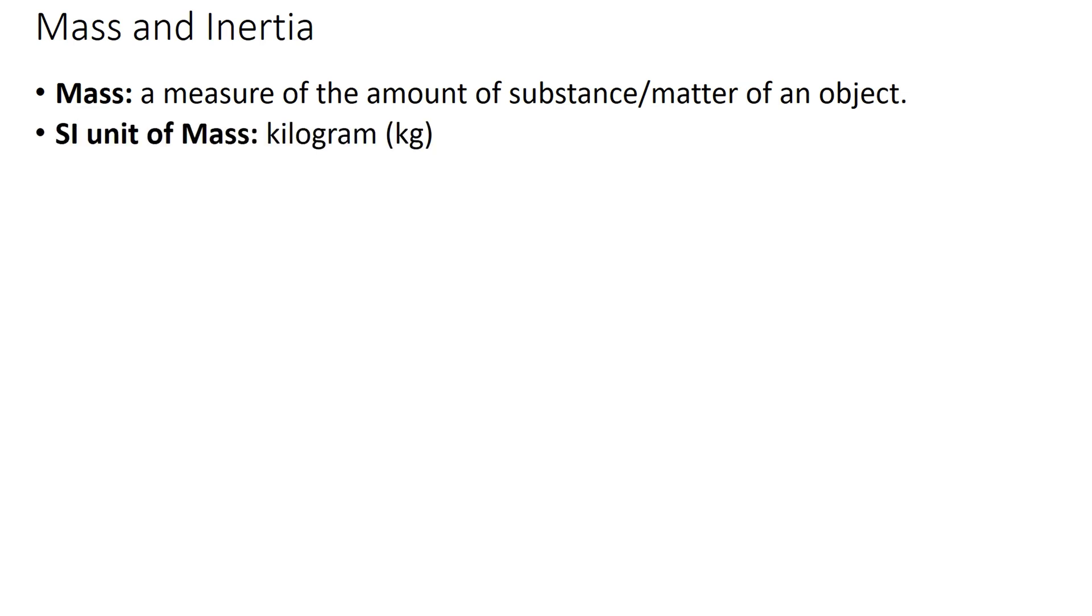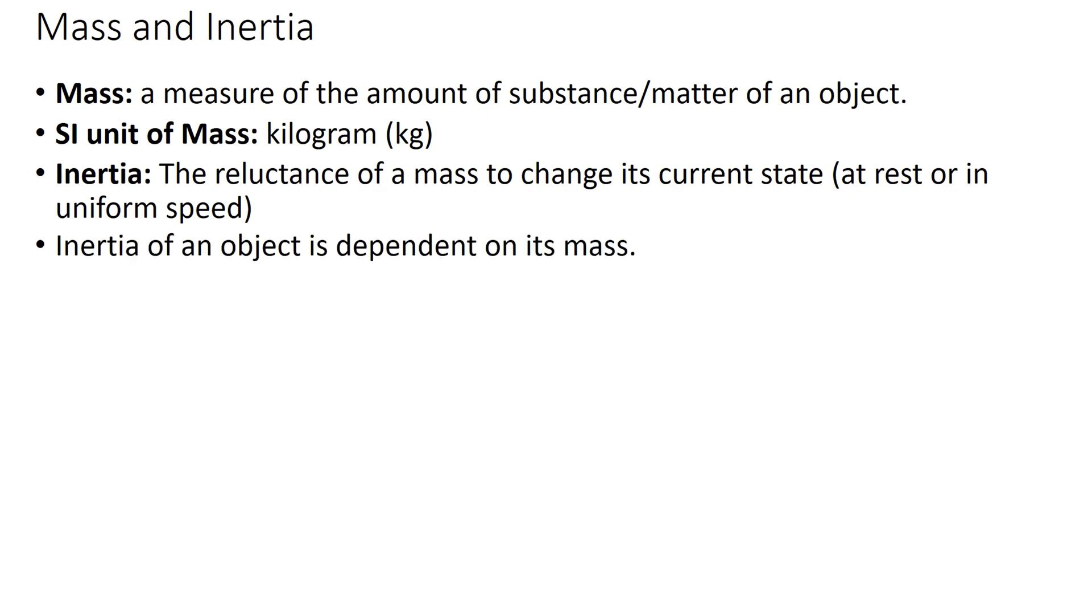Mass and inertia. Mass is a measure of the amount of substance or matter of an object. The SI unit of mass is kilogram, symbol kg. Inertia is the reluctance of a mass to change its current state, either at rest or in uniform speed. Inertia of an object is dependent on its mass. The larger the mass, the larger the inertia.